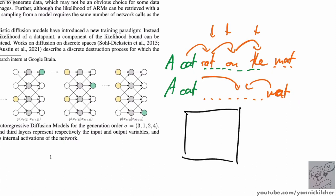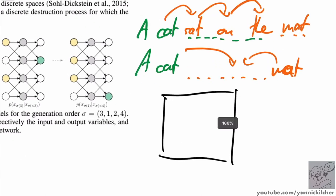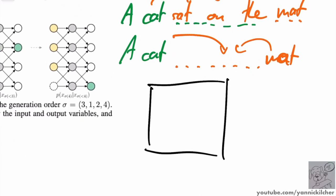In something like Image GPT, you have an image and you start at the top left, simply producing pixels left to right, top to bottom. There's not really a reason why this is the best order to produce things. It's simply that we train this way, and that means we have to predict this way.